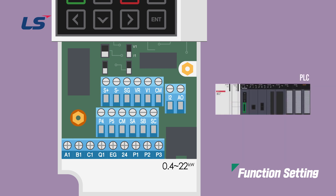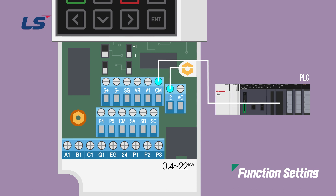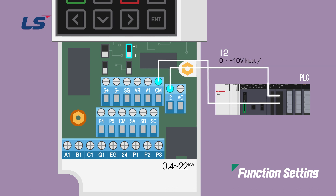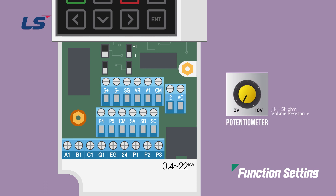When inputting the output voltage of an external device, wire using the V1 and CM terminals, or I2 and CM terminals. The I2 terminal becomes a voltage input terminal that receives 0 to 10 volts when the analog voltage current input terminal setting switch is placed upward, and when it is placed downward, it becomes a current input terminal that receives 4 to 20 mA. When using the AC drive's internal power, wire a 1k to 5k ohm volume resistor to VR, V1, and CM.